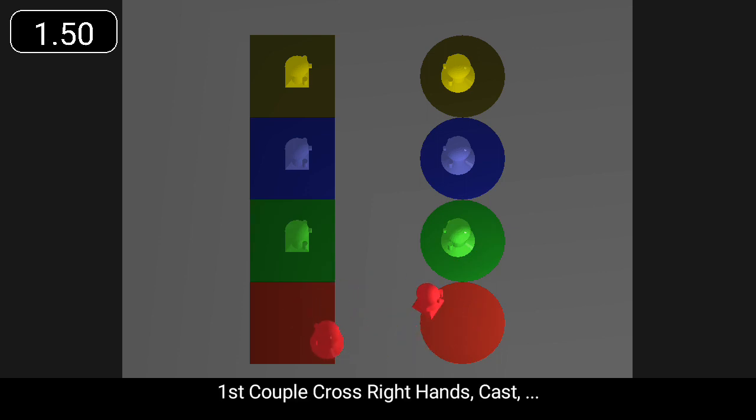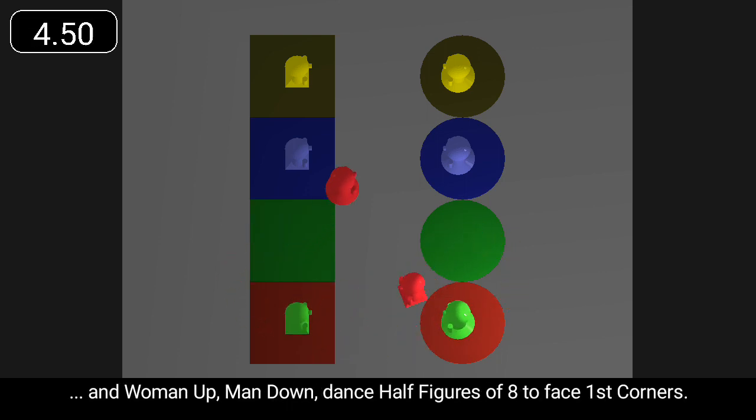First couple cross right hands, cast, and woman up, man down dance half figures of eight to face first corners.